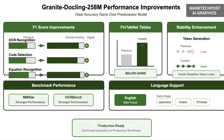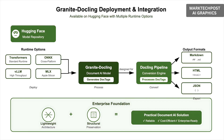Early-stage multilingual support for Japanese, Arabic, and Chinese is included, though English remains the main focus. Granite DocLing is available on HuggingFace in multiple runtimes, including Transformers, ONNX, VLLM, and MLX for Apple Silicon. It is designed to be used with the DocLing pipeline, which converts DocTags into Markdown and HTML. By combining a lightweight architecture with structural preservation, Granite DocLing provides a practical foundation for enterprises seeking reliable and cost-efficient document AI solutions.